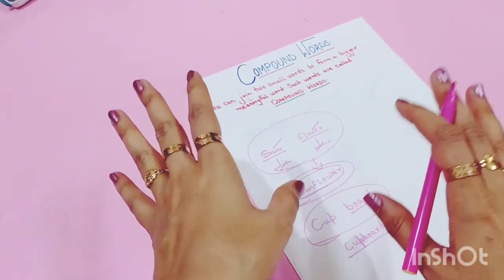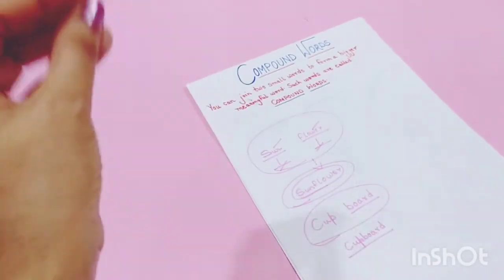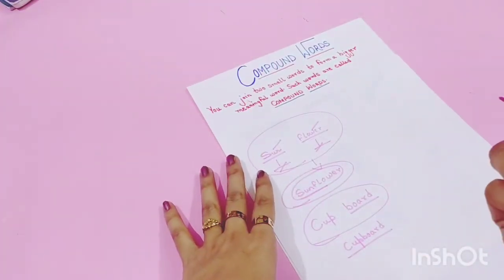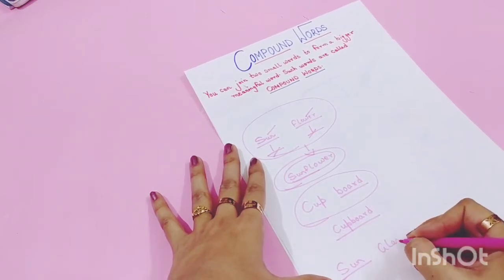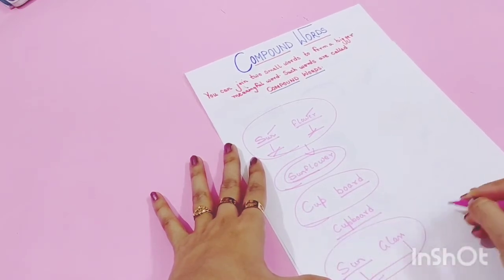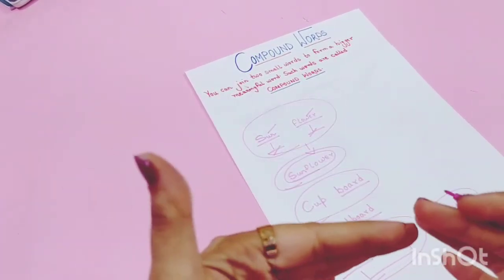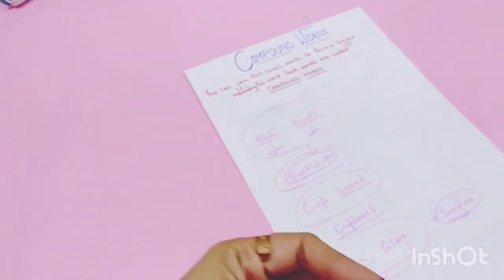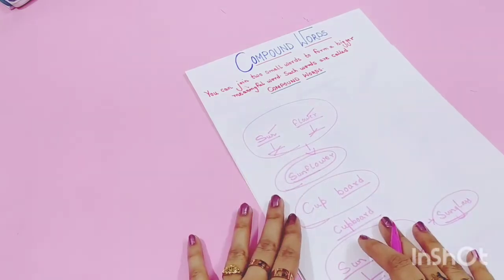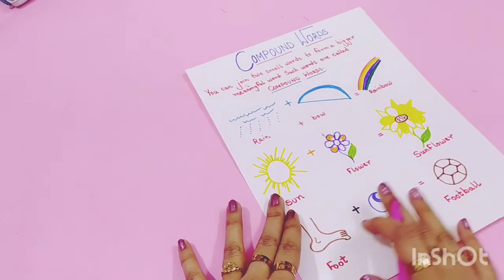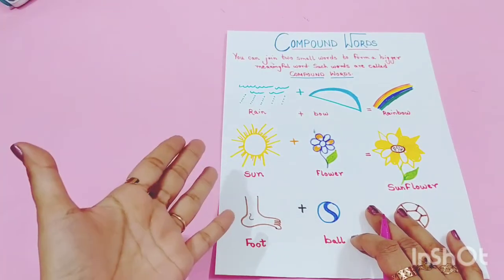Especially for Grade 1, this topic on grammar — you must try to explain these examples, and they will also understand them. When you learn about compound words, you can explain them briefly and properly, and then they will clear the concept.